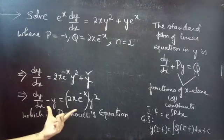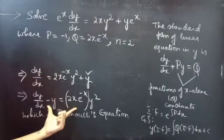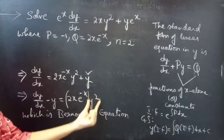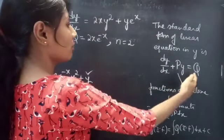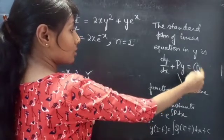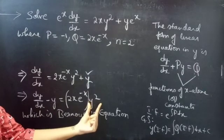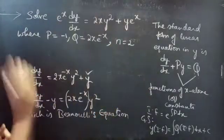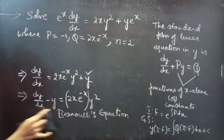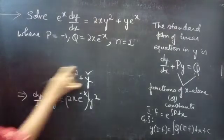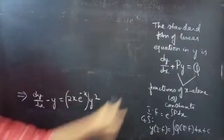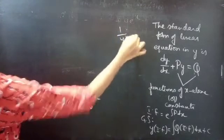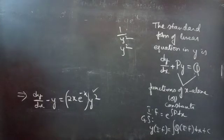Now we will reduce this Bernoulli's equation to a linear equation. Observe both equations. In Bernoulli's equation we have the extra factor y², but in the linear equation q is either a function of x alone or a constant. So we need to eliminate y² from the Bernoulli's equation to reduce it to linear form. For that purpose, we will divide the whole equation by y².